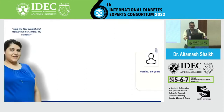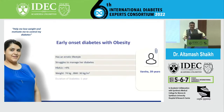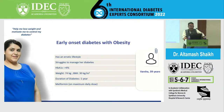This is a routine garden variety type 2 diabetic patient named Varsha, 39 years old. She is having early onset of diabetes and obesity, erratic lifestyle, and she struggles to manage her diabetes. HbA1c is more than 9, weight is 74 kg with BMI of 30, duration of diabetes one year, and she is on metformin at maximal daily dose.